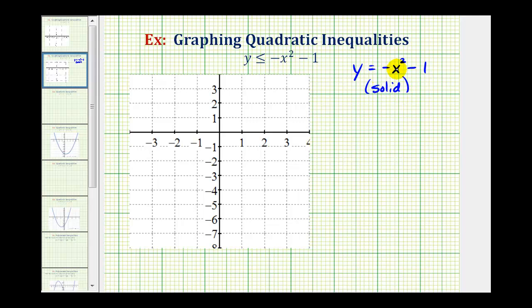The solid graph means that the points on the graph are part of the solution and will satisfy this inequality. If it was just y is less than negative x squared minus one, then the graph would be dashed because the points would not satisfy the inequality.